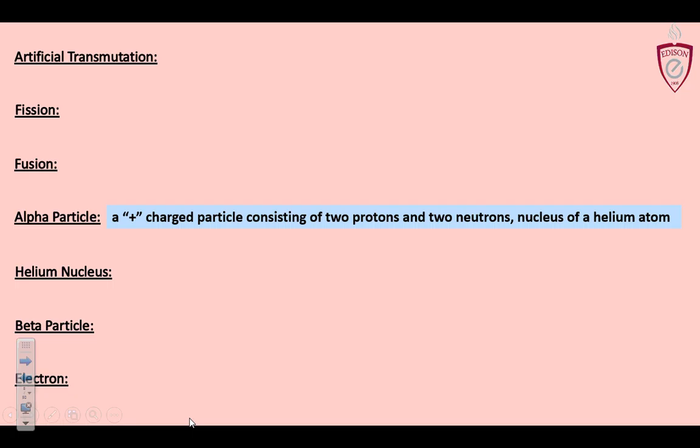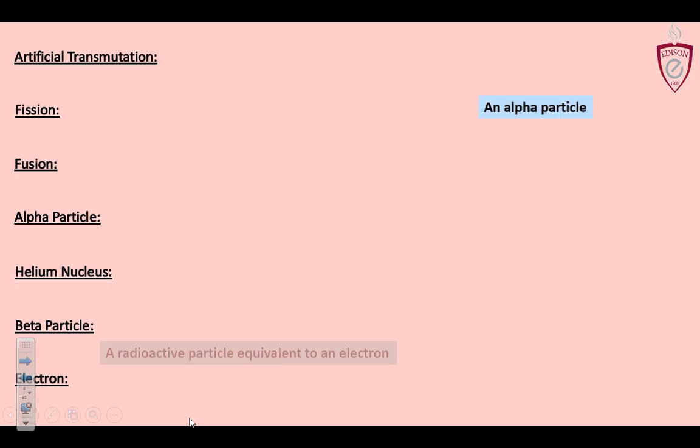An alpha particle is a positively charged particle consisting of two protons and two neutrons. In summation, it is the nucleus of a helium atom. It's been stripped of its electrons. That's why it's considered just a particle. A helium nucleus is an alpha particle, so synonymous. Notice the definition for alpha particle is not alpha particle when you're doing your vocab quiz. Alright, duh.